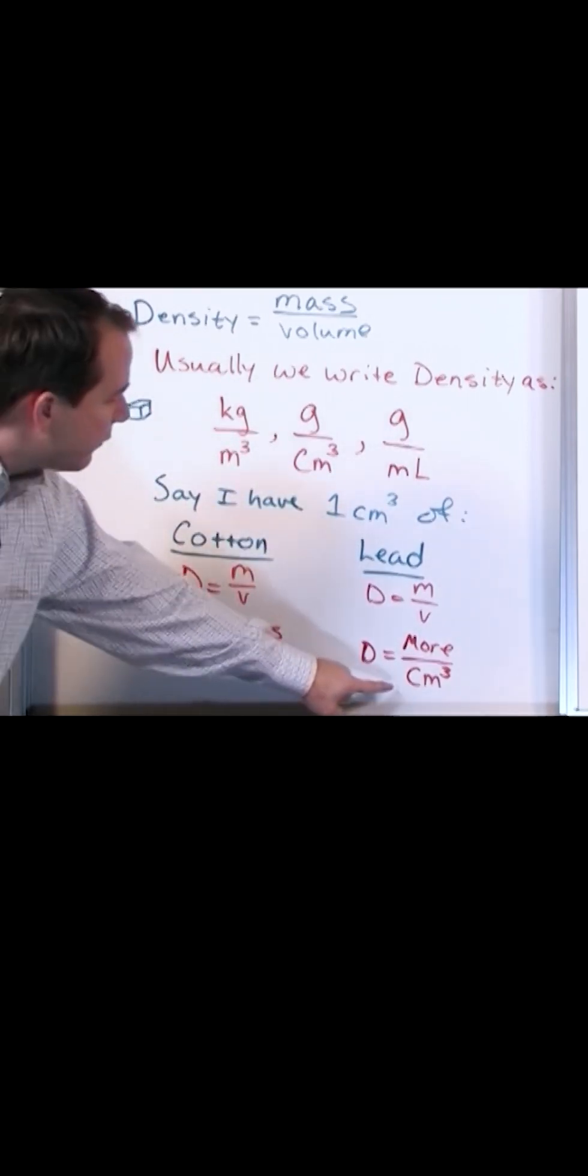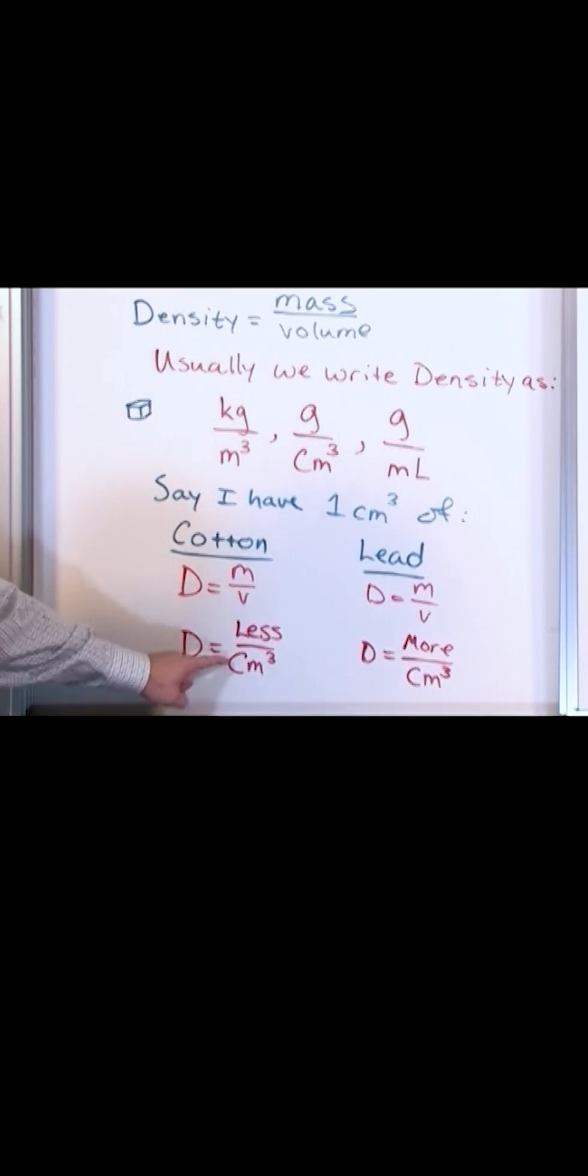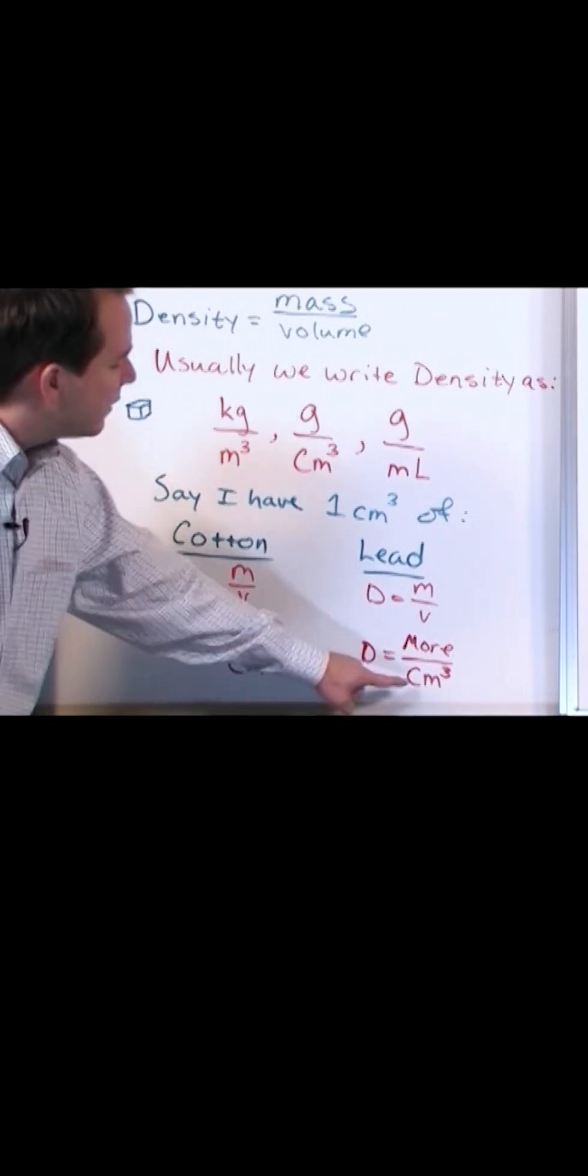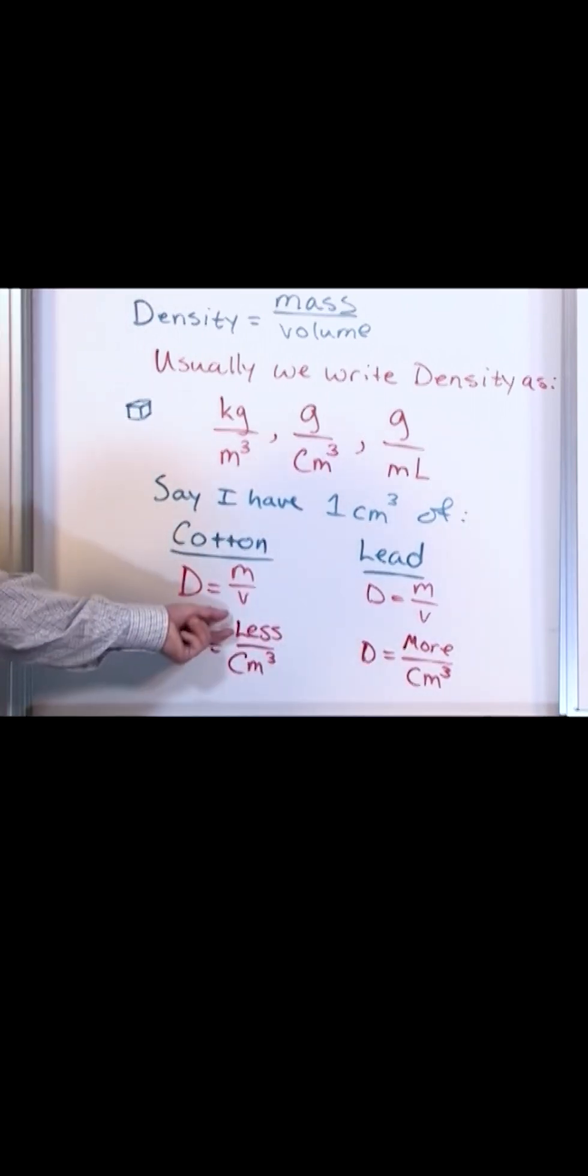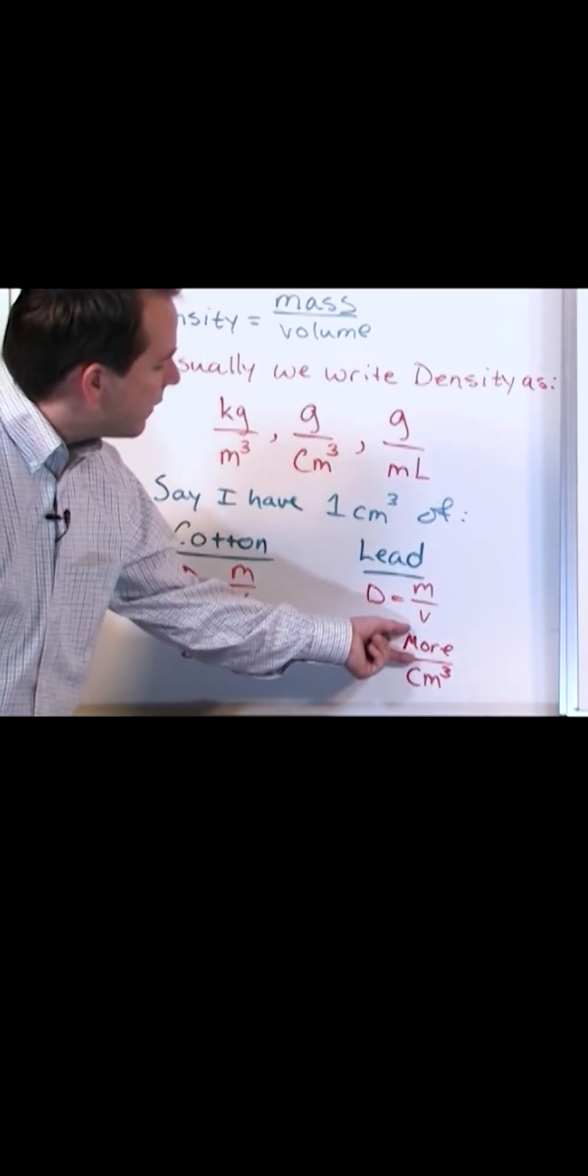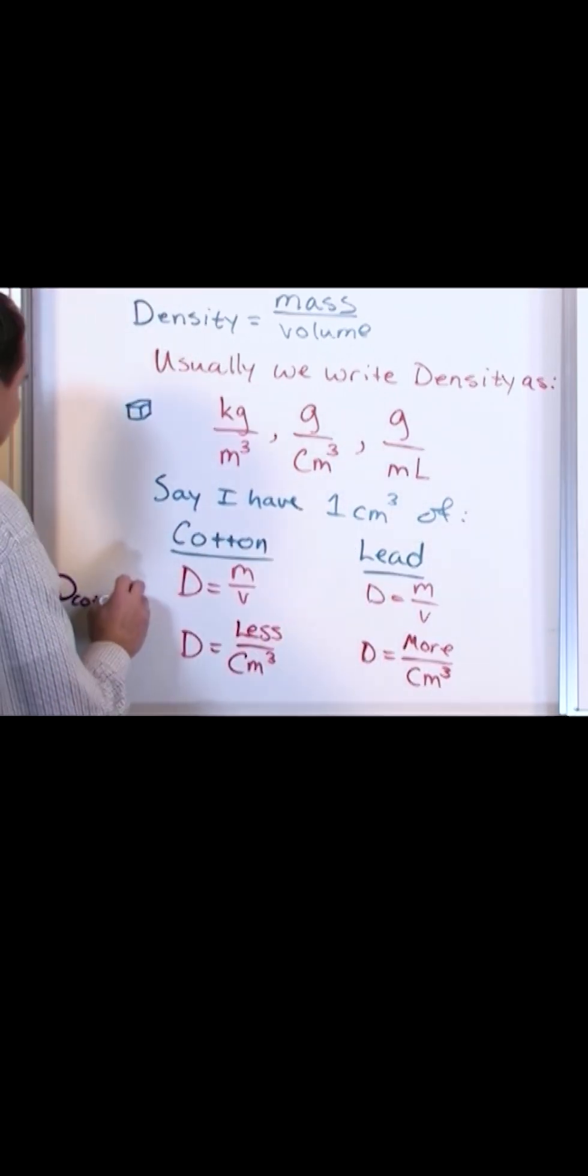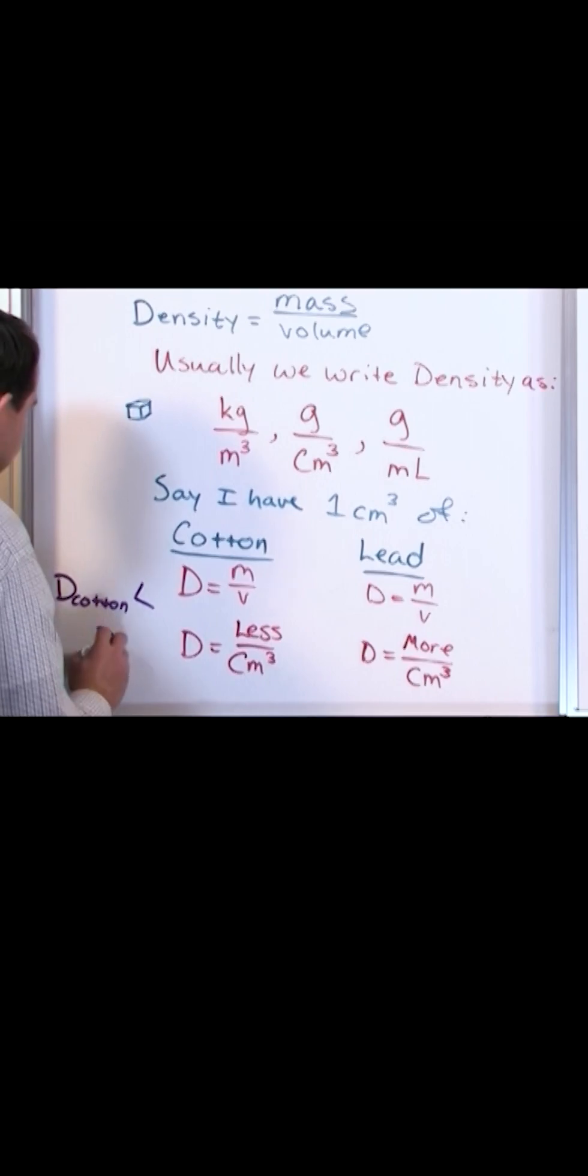The volume is represented here in the bottom. There's a sort of an implied one out here in front because it's one cubic centimeter in each case. So if I have one cubic centimeter in both cases, then I'm going to have less mass for cotton and relatively speaking, more mass of the lead. Density of the cotton is less than the density of the lead.